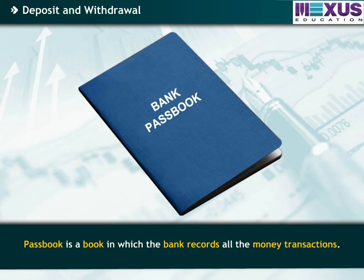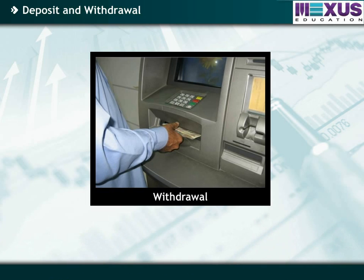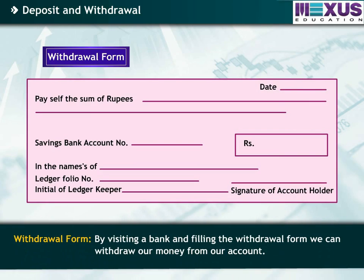A passbook is a book in which the bank records all the money transactions. A withdrawal is when you take your money out of the bank account, and thus your account balance decreases. The money can be withdrawn from your account in many ways. One method is by visiting a bank and filling the withdrawal form to withdraw money from your account.